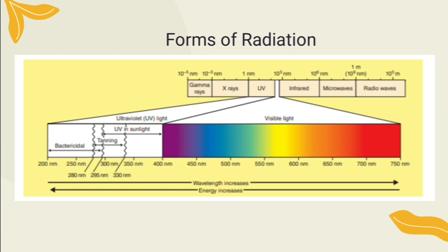The ultraviolet portion of the light spectrum includes all radiations with wavelengths from 100 nm to 400 nm. The microbicidal activity of UV light depends on the length of exposure — the longer the exposure, the greater the cidal activity — and also depends on the wavelength of UV used. The most cidal wavelengths of UV light lie in the 260–270 nm range, where it is absorbed by the nucleic acid of microorganisms.